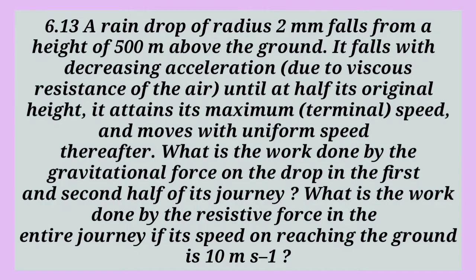Example 6.13. A raindrop of radius 2 mm falls from a height of 500 meters above the ground. It falls with decreasing acceleration due to viscous resistance of the air until at half its original height, it attains its maximum speed and moves with uniform speed. What is the work done by the gravitational force on the drop in the first and second half of its journey? What is the work done by the resistive force in the entire journey if its speed on reaching the ground is 10 meters per second?